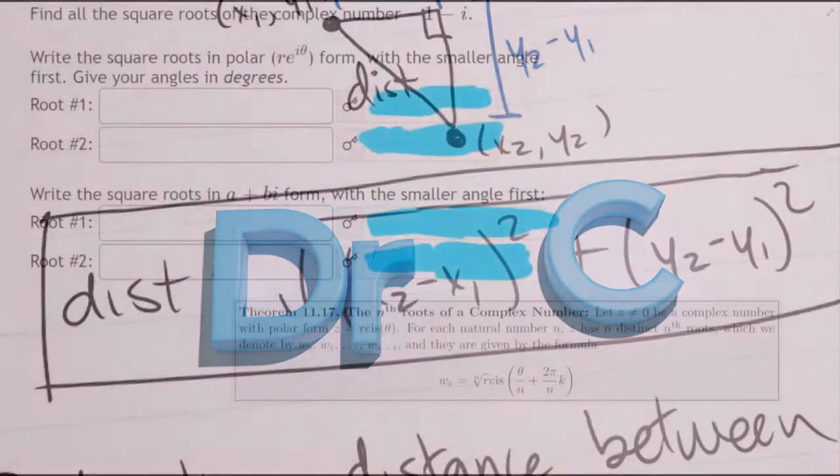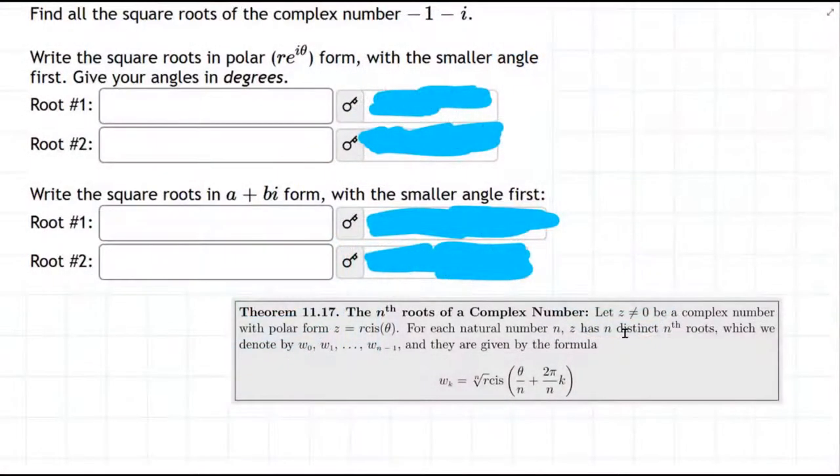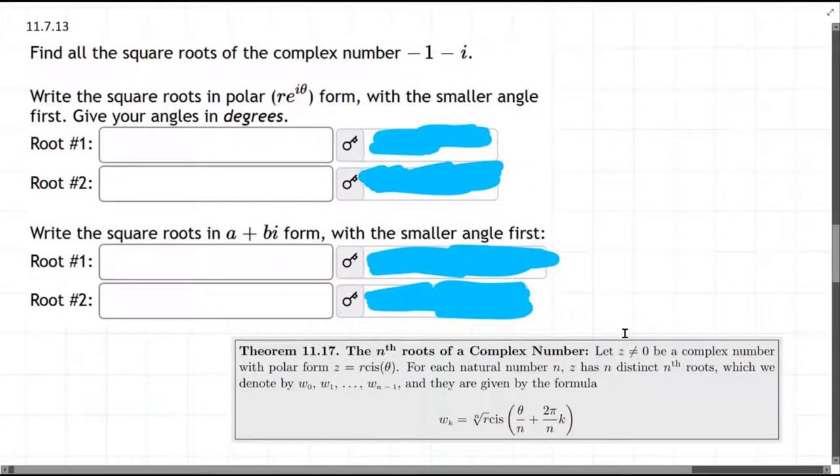We're about to compute the square root, and there's going to be two square roots of the number negative one minus i. And we're supposed to first give them in r e^(i theta) form, with the smaller angle first.